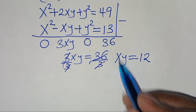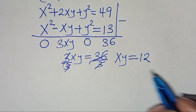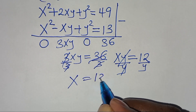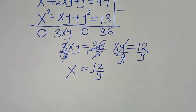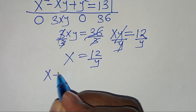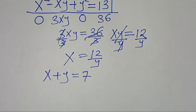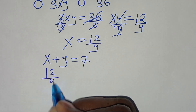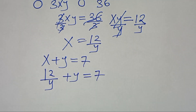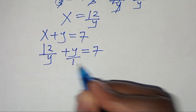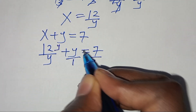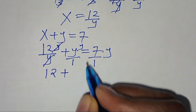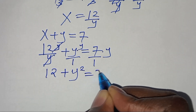From xy equals 12, we can make x the subject: x equals 12 over y. Substituting into x plus y equals 7, we have 12 over y plus y equals 7. Multiplying both sides by y gives 12 plus y squared equals 7y.